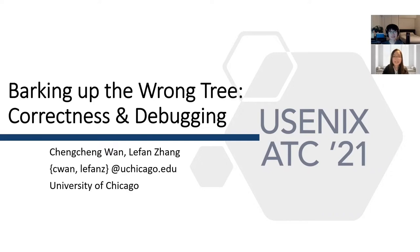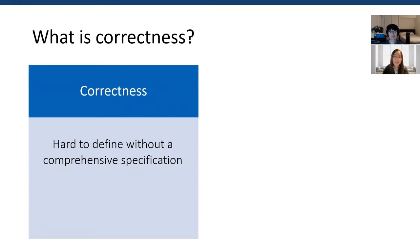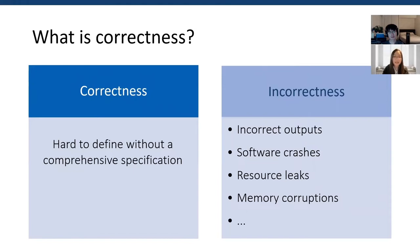People have different requirements on different types of software systems. What is correctness? It is hard to define without a comprehensive specification. But we do know a number of cases are definitely incorrect, like incorrect outputs, software crashes, resource leaks, memory corruptions, and others.